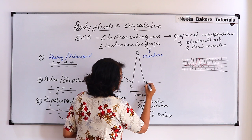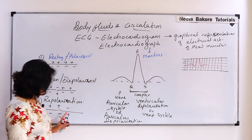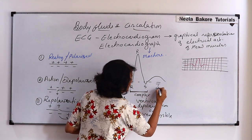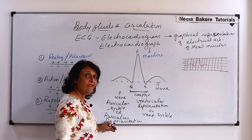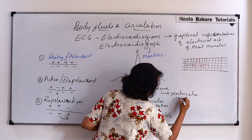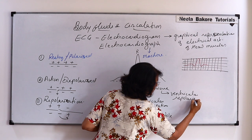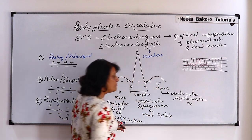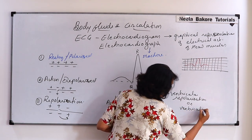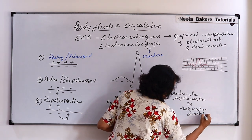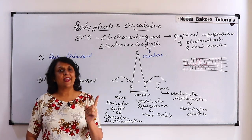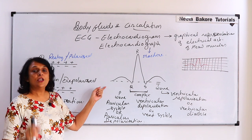When the ventricles contract, the auricles relax. Then when the ventricles relax, there is charge movement, and this wave is the T-wave. The T-wave represents ventricular repolarization, or ventricular diastole.